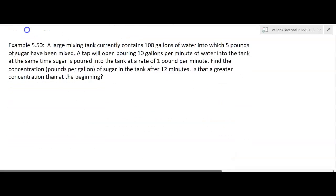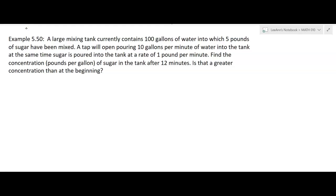So let's look at this example we have. A large mixing tank currently contains 100 gallons of water into which 5 pounds of sugar have been mixed. So we've got 100 gallons of water, 5 pounds of sugar.